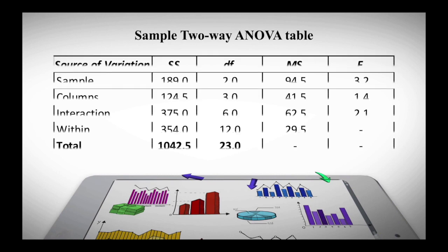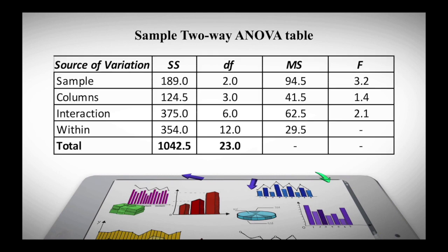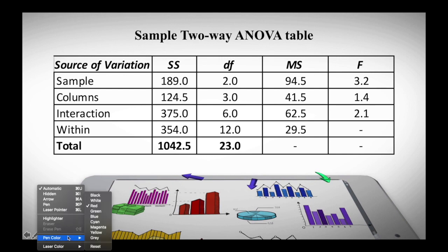Here is the sample two-way ANOVA table. As you can see, the source of variation includes the sample, the columns, and the interactions. The columns here — I'll use black pen — the columns are equivalent to what we call the treatments.